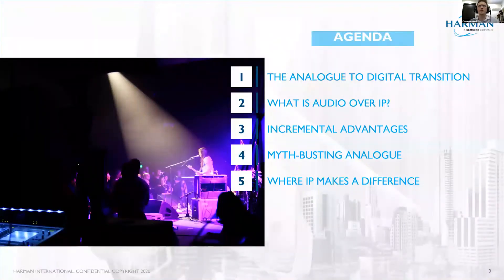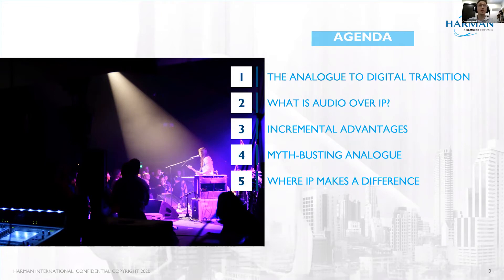So what are we going to talk about today? First up, I want to do a quick history lesson on the analog to digital transition, because it wasn't actually that long ago that analog was the only thing we did in the audio and video world. Then I want to have a quick look — not too deep — at what is audio or video over IP. Then we'll look at the incremental advantages that came from the shift between analog to digital and then across to IP.